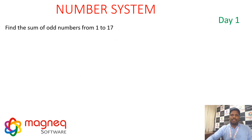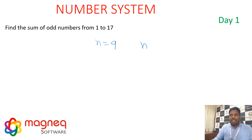Sum of odd numbers from 1 to 17. There are 9 odd numbers from 1 to 17. Formula: n² = 9² = 81.